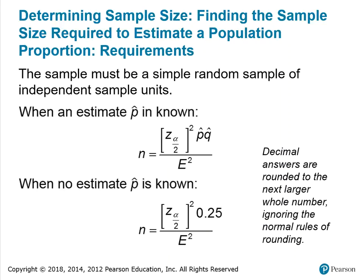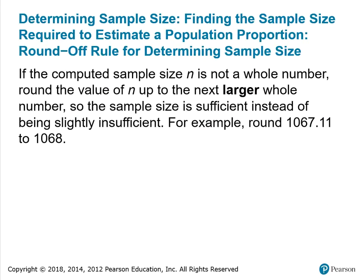The sample must be a simple random sample of independent sample units. When an estimate P-hat is known, we use one formula; when no estimate of P-hat is known, we use a second formula. The only difference between the two is that P-hat Q-hat is replaced by 0.25. Decimal answers are rounded to the next larger whole number, ignoring the normal rules of rounding — so that the sample size is sufficient rather than slightly insufficient.